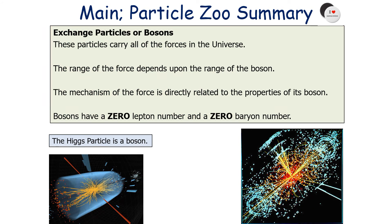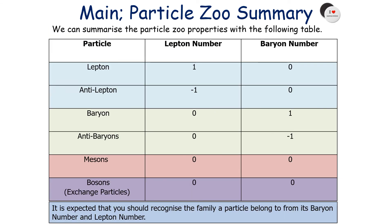The final family are the exchange particles, or bosons. These particles carry all of the forces in the universe. The range of any force or interaction depends on the range of the boson, and the mechanism of the force is directly related to the properties of the boson or its exchange particle. Bosons have a zero lepton number and a zero baryon number. To summarise: leptons have a lepton number of one and baryon number of zero; anti-leptons have lepton number minus one and baryon number zero; baryons have lepton number zero and baryon number one; anti-baryons have lepton number zero and baryon number minus one; mesons and bosons both have lepton number and baryon number of zero.